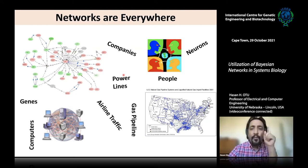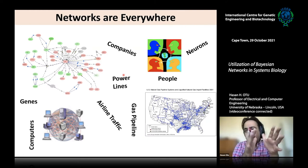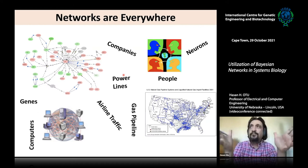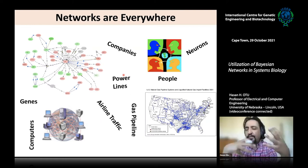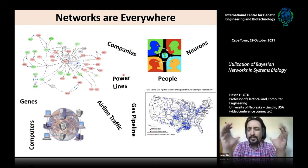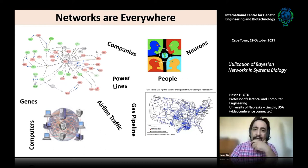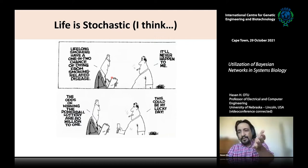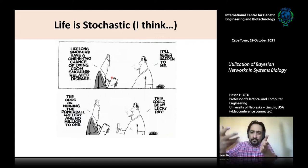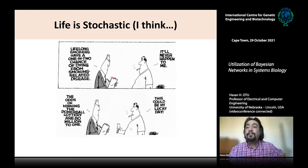Most work done on networks was on deterministic static networks — links are already either there or not, with ideas like degree distribution and clustering coefficients. But life is stochastic, so I thought we should move away from static deterministic networks and deal with probabilistic networks instead.